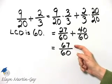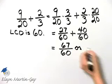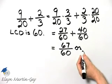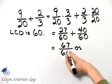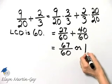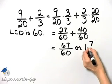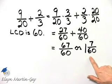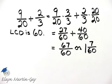Now, let's also write this as a mixed number, since it's an improper fraction. By the way, sixty-seven and sixty have no common factors other than one, so it is in simplest form, but as a mixed number, sixty divides into sixty-seven one time, remainder seven over that original denominator. So here's the sum, or equivalently as a mixed number.